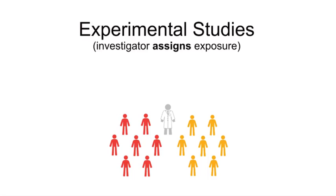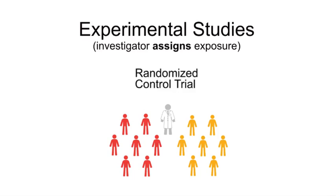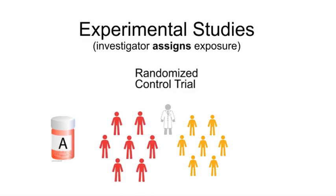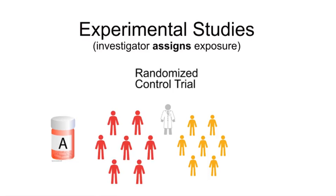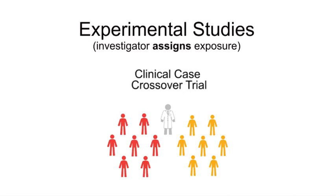Next, we will cover two types of experimental studies: randomized control trials and clinical crossover trials. In a randomized control trial, the treatment of interest, such as a new drug, would be randomly allocated to half of the study subjects, and the other half would receive a placebo or the current standard of care or medication for the disease. An example would be a study comparing two different treatments for arthritis, where subjects are randomized to one of the two treatments. In a clinical crossover trial, subjects switch from one treatment to another after a certain period of time — they cross over to the other treatment or exposure. We'll go into more depth on this type of study later in this module.